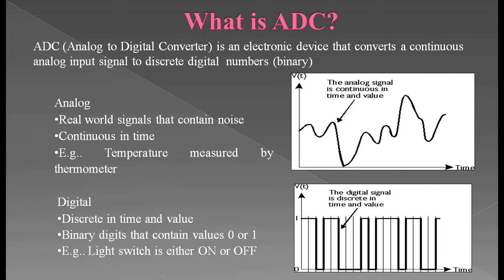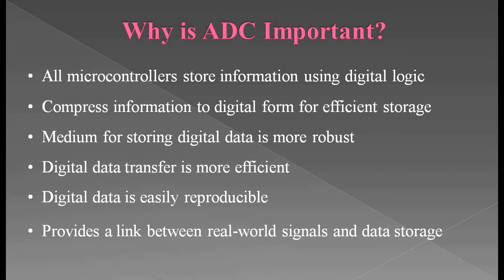Now, what is an ADC? An ADC is an analog to digital converter — an electronic device that converts a continuous analog input signal into discrete digital numbers, or binary numbers, also called a digital signal. Why is ADC important? All microcontrollers and other digital devices used in circuits store information using digital logic — they will work only on digital input. A continuous analog input will be invalid for such components, so we need to convert the analog signal into a digital signal. Those devices compress information into digital form for efficient storage.